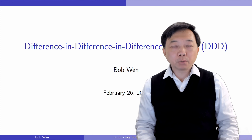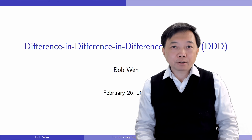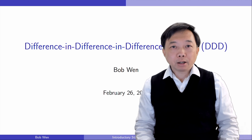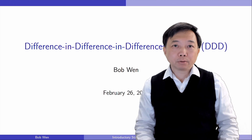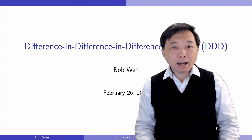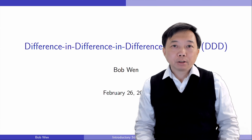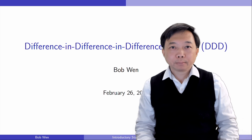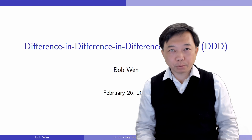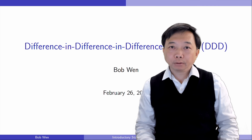It depends on a crucial assumption: the parallel trends assumption. It states that the treatment group and the control group are similar in every aspect except that the control group did not receive the treatment. It is equivalent to saying that the factors other than the treatment affect the two groups in the same way. In other words, the outcome variables of the treatment group and the control group have the same trend if neither of them experiences the intervention.